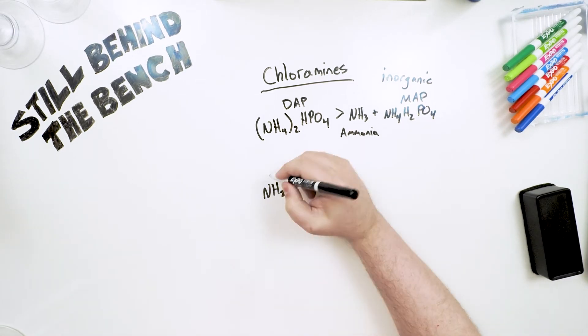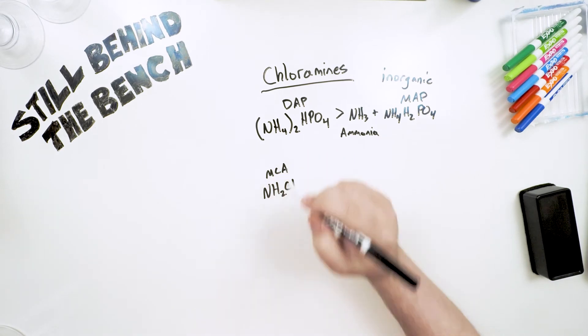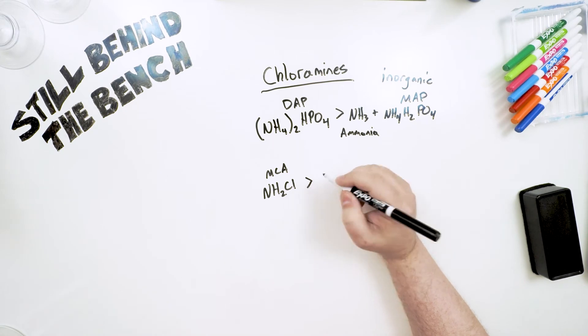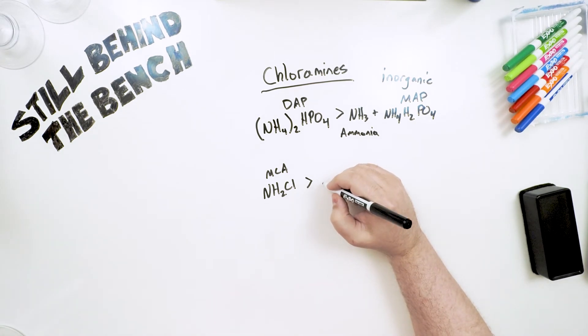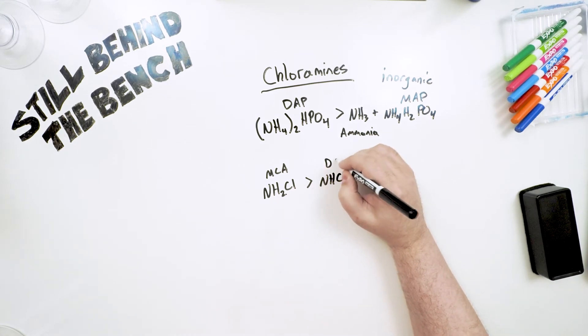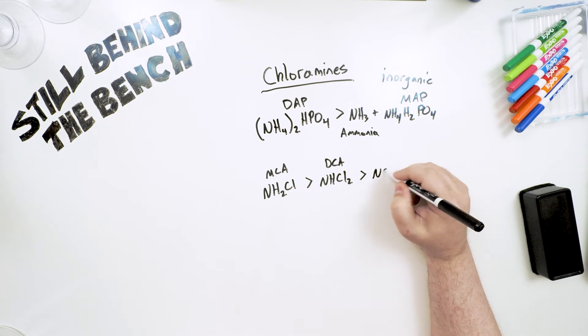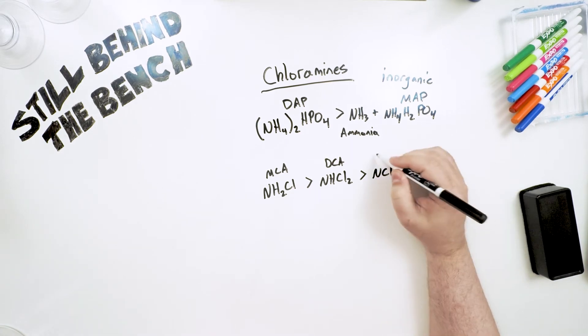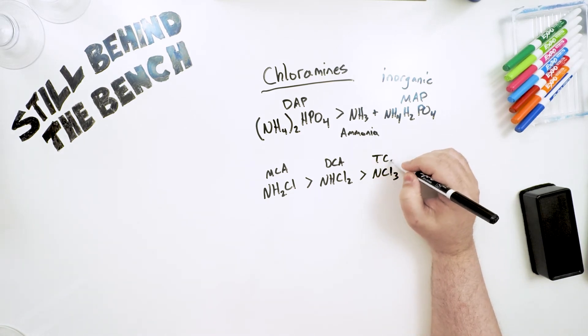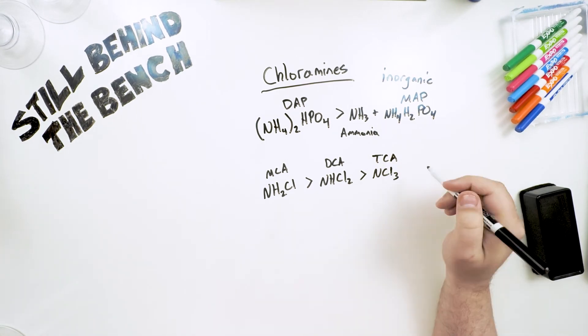A series of chemical reactions will start happening almost immediately. The first thing that will happen is a compound called monochloramine will be created. That will react with what bleach is left over. And it will create a compound called dichloramine. And then that will react with what bleach is left over and create a compound called trichloramine.